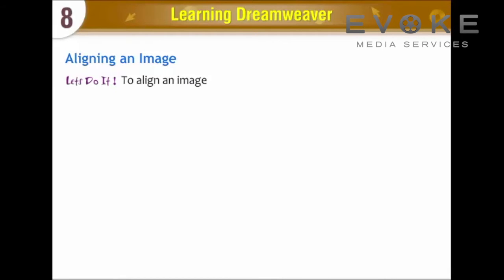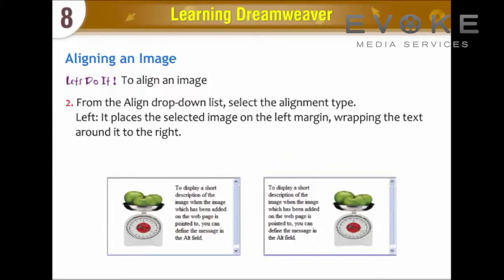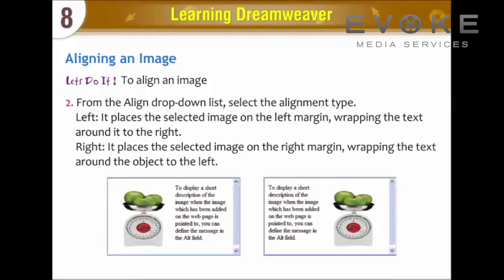Aligning an Image. To align an image, select the image. From the Align drop-down list, select the alignment type. Left: it places the selected image on the left margin, wrapping the text around it to the right. Right: it places the selected image on the right margin, wrapping the text around the object to the left.